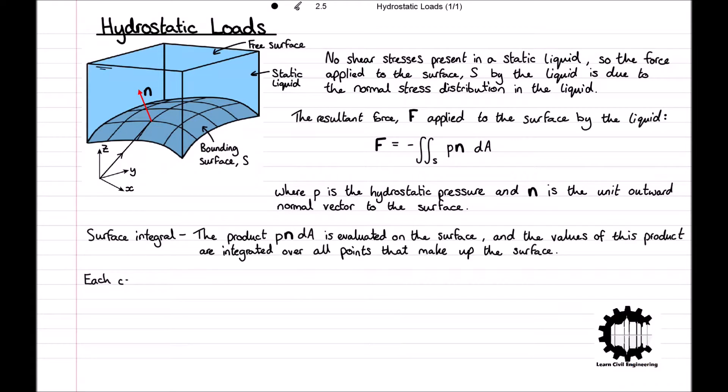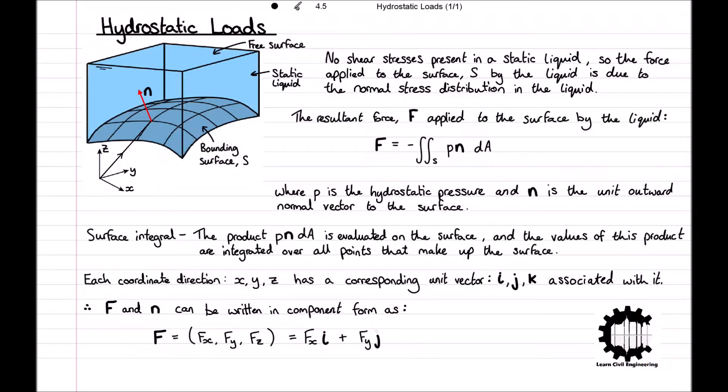Additionally, each coordinate direction x, y, z has a corresponding unit vector i, j, k associated with it. Therefore, the vector quantities F and n can be written in component form as F is composed of Fx, Fy, and Fz, and then expanding this out as an expression F is equal to Fx·i plus Fy·j plus Fz·k, and then the exact same can be done for n.